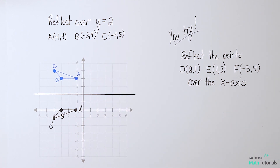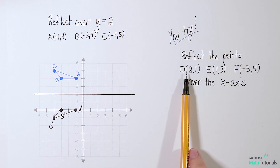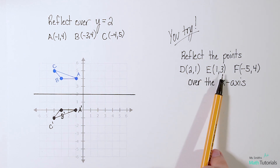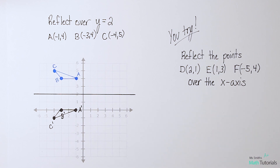Now I want you to try one. Take these points: D at (2, 1), E at (1, 3), and F at (-5, 4), and reflect them over the x-axis. Give me the points of what the new image would be. You may need to go back to that first page and peek at the rule until you have them memorized. I will post the answer in the description below the video. This has been Ms. Smith's Math Tutorials.